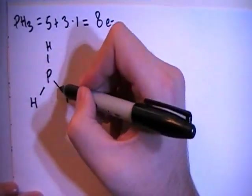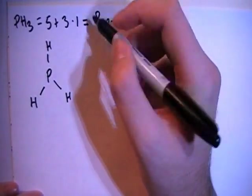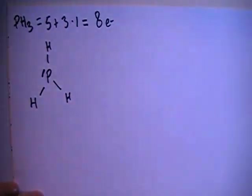And that's 2, 4, 6 electrons out of the 8 total. So we need to have these 2 more electrons to add up to 8. And we'll put those right here on the central phosphorus. And that's going to be our final structure.